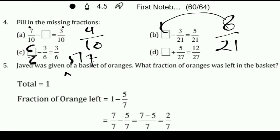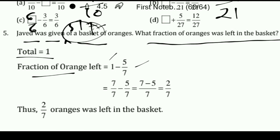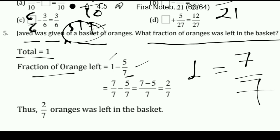Question number 5: If Javed was given 5 by 7 of a basket of oranges, what fraction of oranges was left in the basket? Total is 1. Fraction of oranges left means total minus 5 by 7. We write 1 as 7 upon 7, so: 7 upon 7 minus 5 upon 7 equals 2 by 7. Therefore 2 by 7 of the oranges was left in the basket.